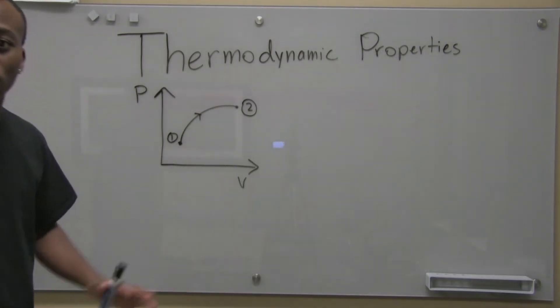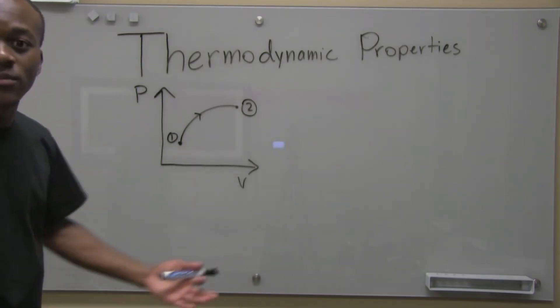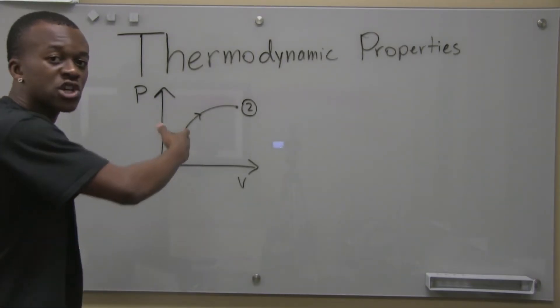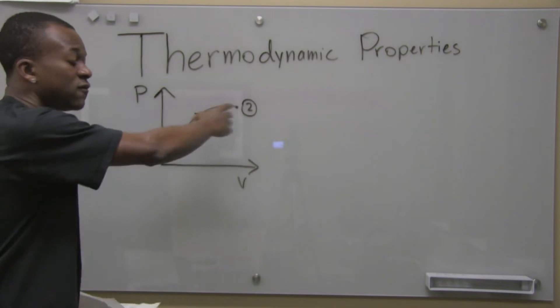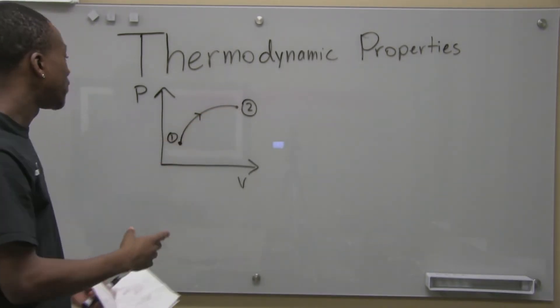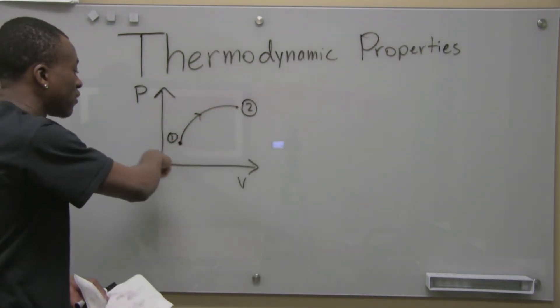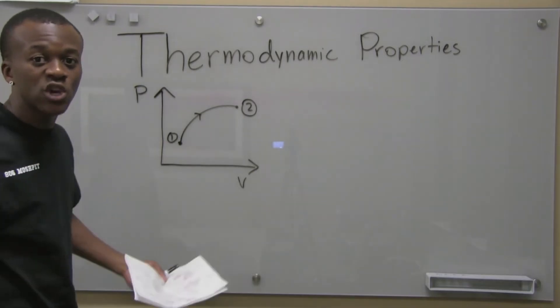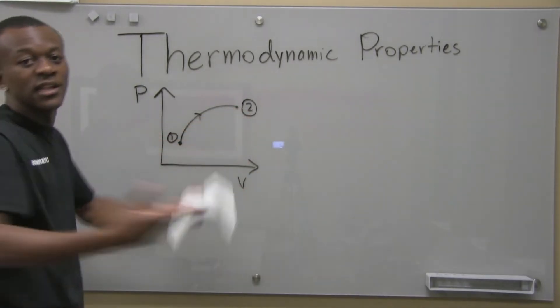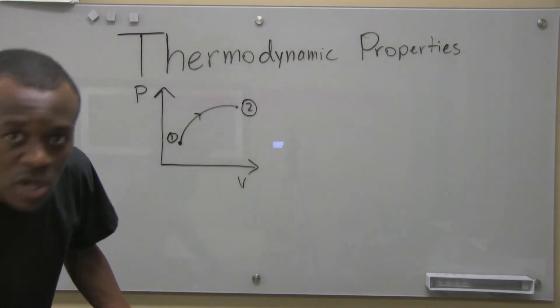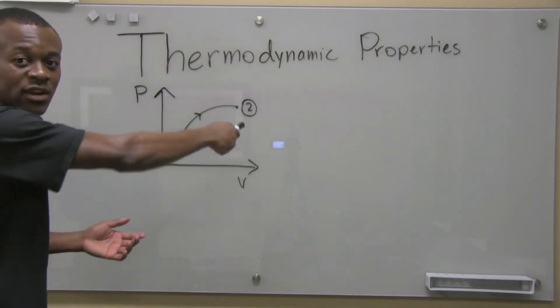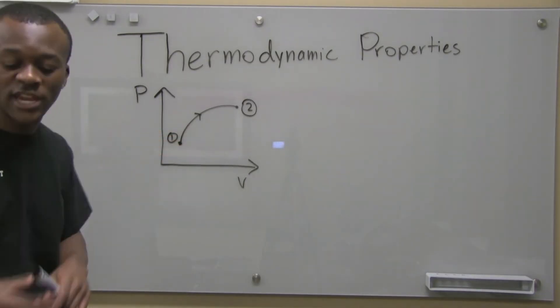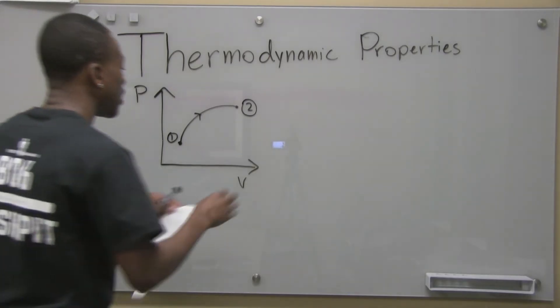Now, if I said, for example, my pressure was at one bar and it moved to two bar while going from 10 meters cubed per kilogram to 11 meters cubed per kilogram, right? So we see an increase in pressure and an increase in volume. That's a change. So that's a process that went on.